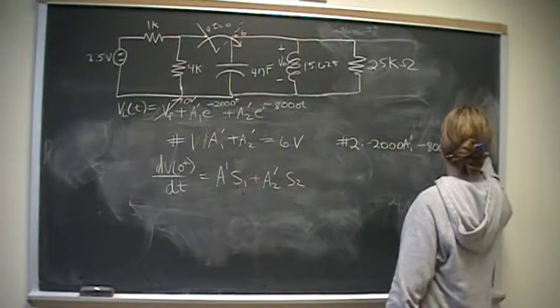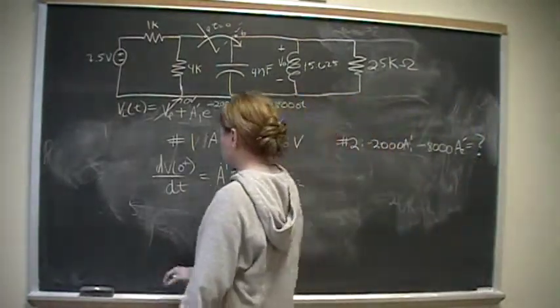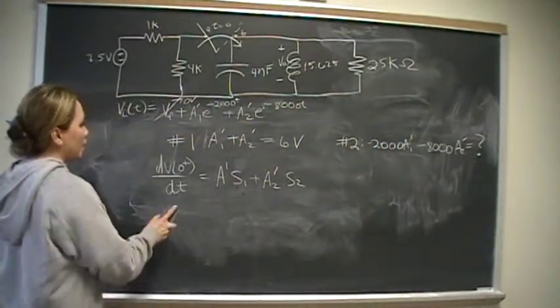So negative 2,000 A1 prime minus 8,000 A2 prime. And that's going to be equal to dv/dt, which we have to find. So what is dv/dt?